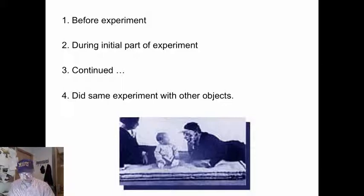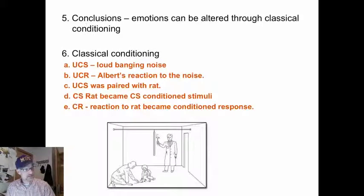They did the same thing with other objects. They'd present a dog and they'd bang. They'd present a white rabbit, a cotton fur coat, a Santa Claus mask. All things little Albert loved, but they conditioned it so that Albert began to fear them. Of course, we couldn't do that today. I wonder what happened to poor little Albert. Did he become a serial killer of some sort? We do not know.